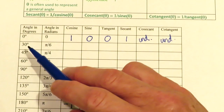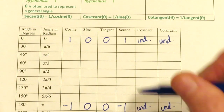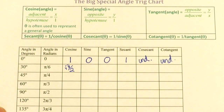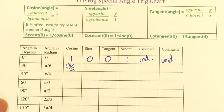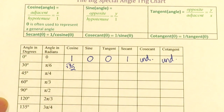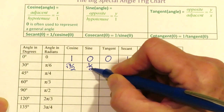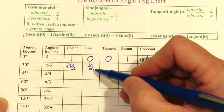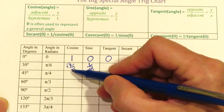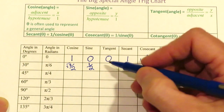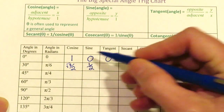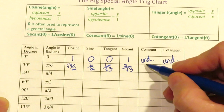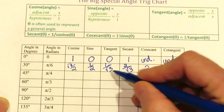At pi over 6, which is 30 degrees, cosine is the square root of 3 over 2. The unit circle equation is x² + y² = 1. At a 30-degree angle, the opposite side y has to be half of the hypotenuse, so y = 1/2. Plugging into x² + y² = 1 forces x to be the square root of 3 over 2. Tangent is sine over cosine, which is 1 over the square root of 3. Secant is the reciprocal of cosine, cosecant is the reciprocal of sine, and cotangent is the reciprocal of tangent.